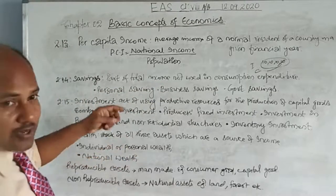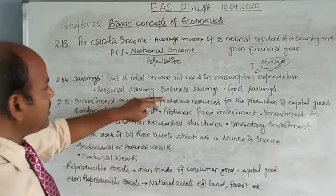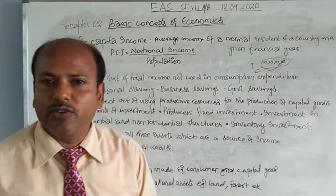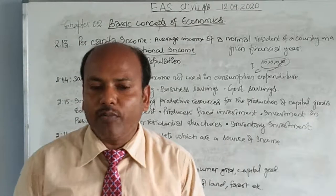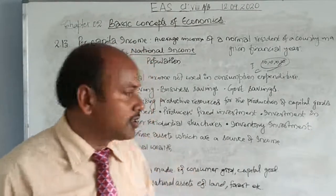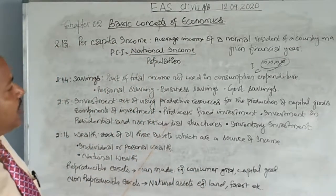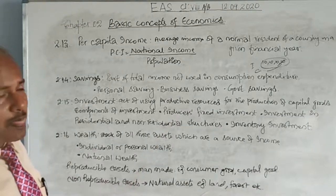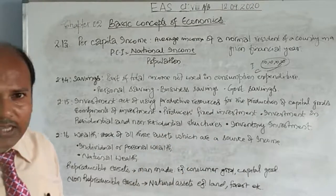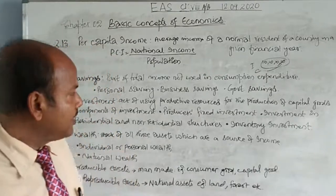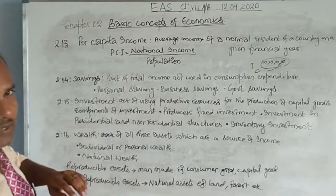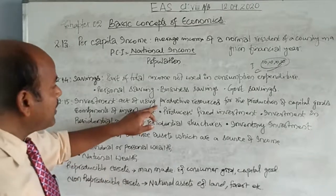There are different types of savings: personal saving, business saving, and government saving. Personal saving refers to savings done by an individual. When a business does the saving, that is business saving. Similarly, the government also does saving — that is called government saving.